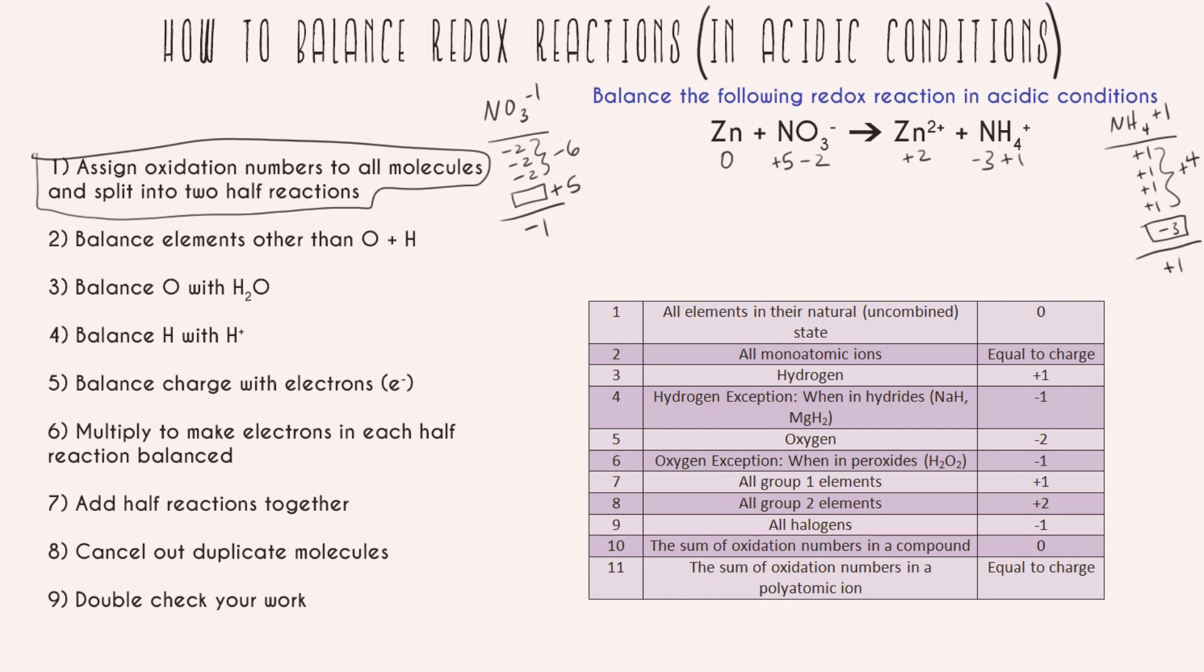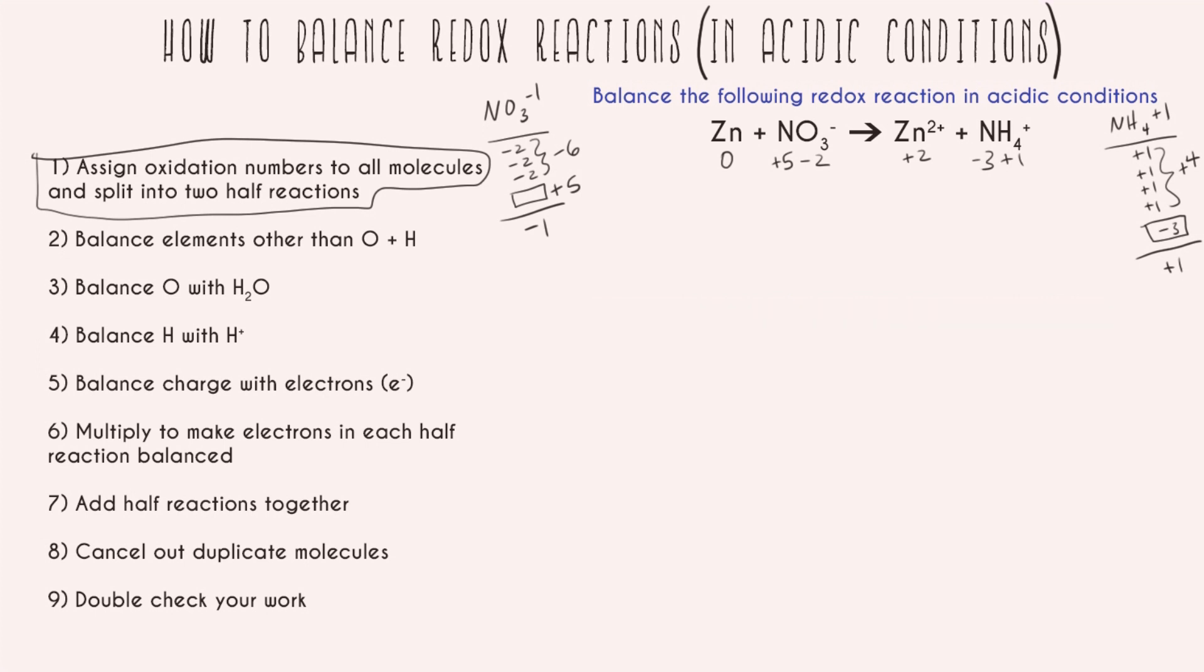All right, so that was a quick review of oxidation numbers. I have a video that's just about oxidation numbers if this step was too fast for you. But for now let's go on to the second part of number one and split our reaction into two half reactions. We can see that our zinc went from neutral to positive two, and that our nitrogen containing compound went from an oxidation number of plus five to negative three.